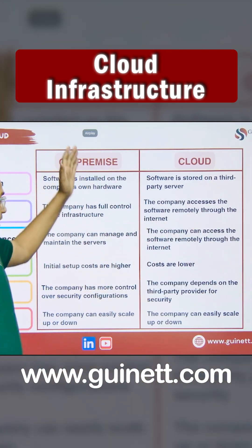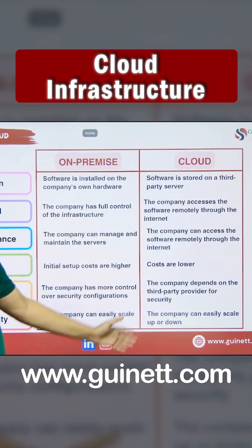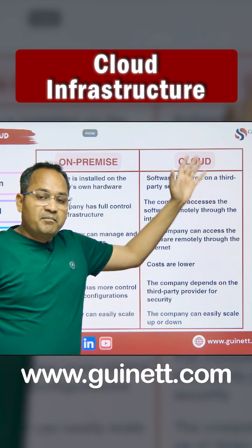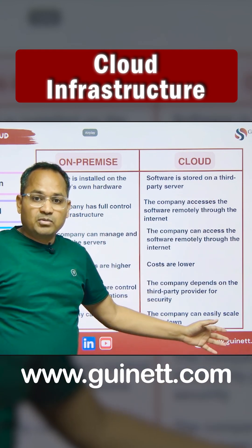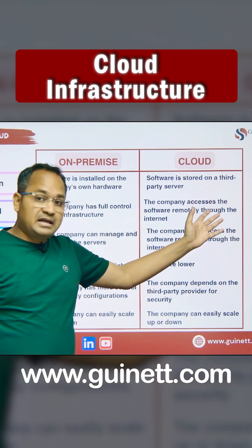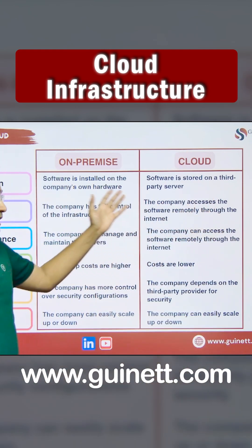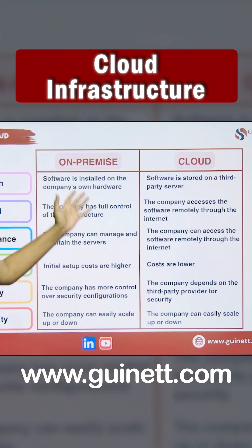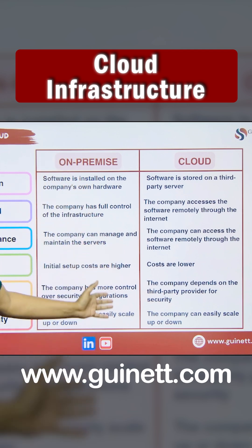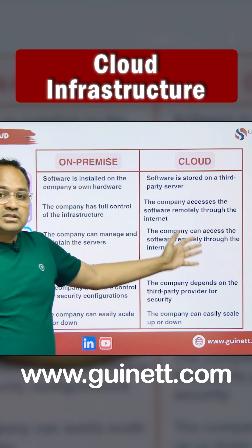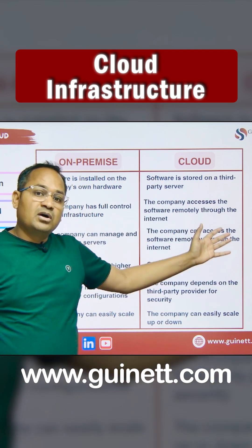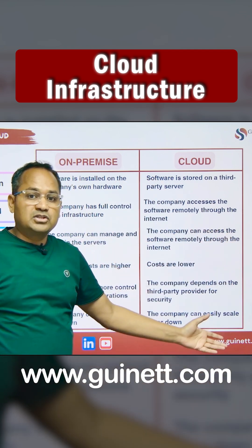In on-premises, one customer is hosted; in cloud, thousands or millions of customers can be hosted. Here you have to pay rent; in on-premises you have to buy everything, manage everything, and configure everything. In the cloud, you just have to rent your services from the cloud provider — that's it.